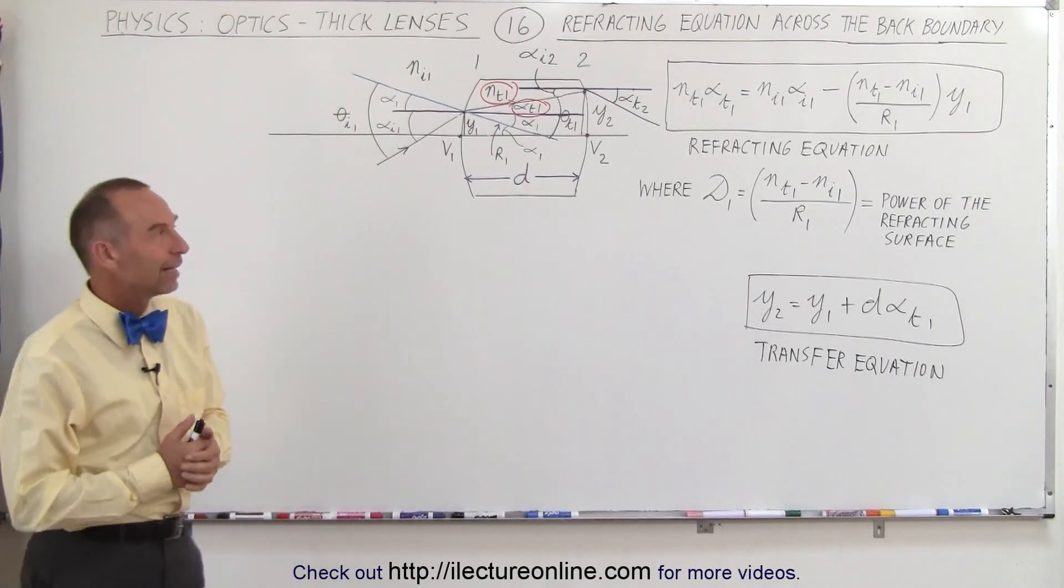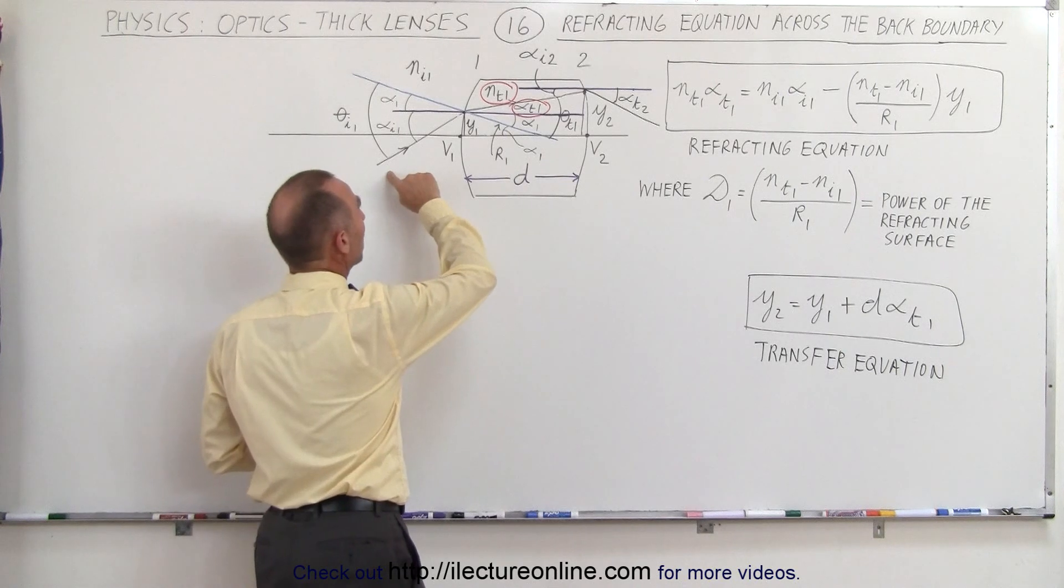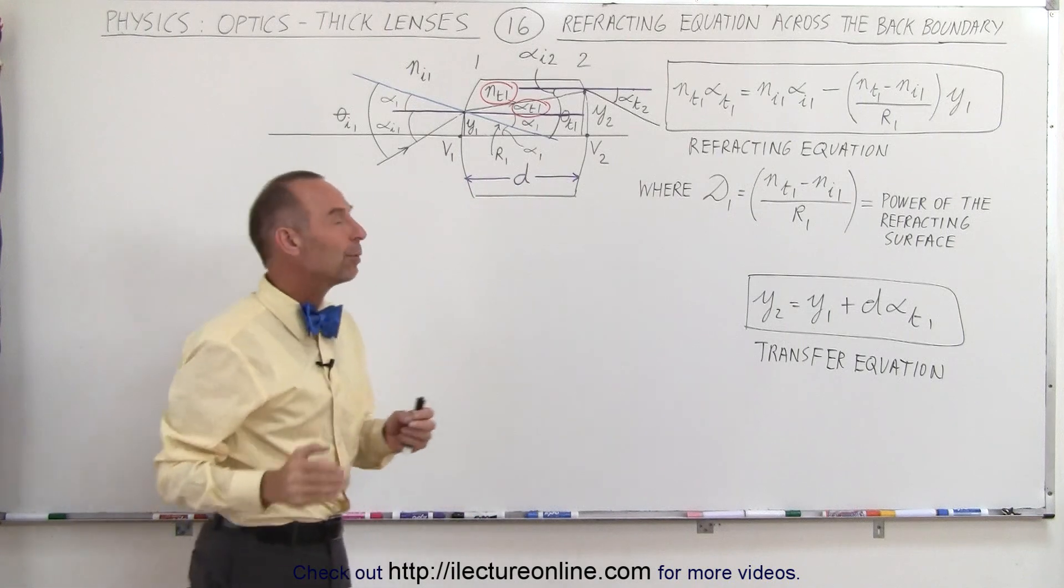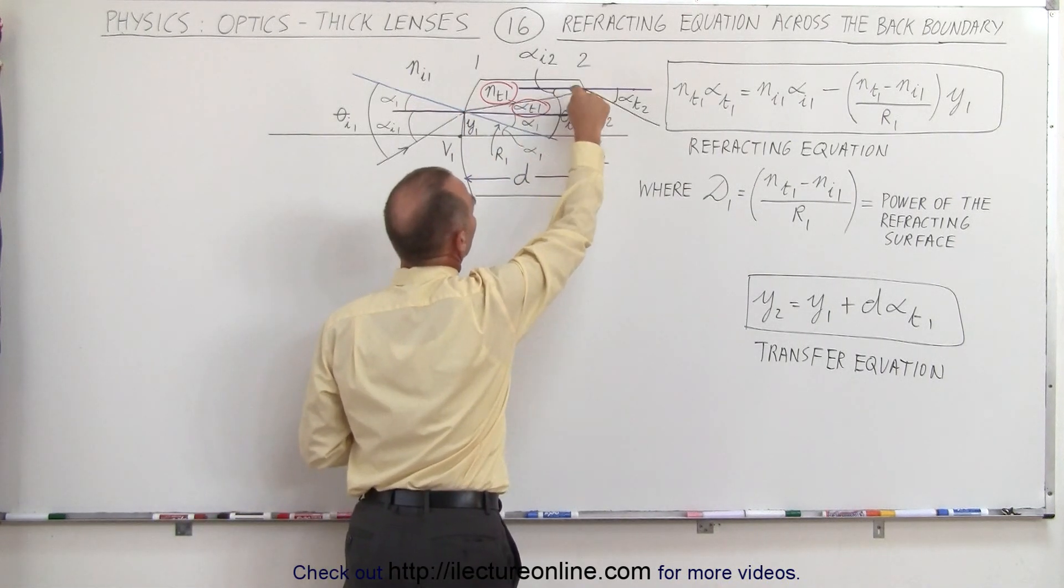Welcome to iLecture Online. So far we've tackled the problem with finding out how a ray crosses the first boundary and we found a refracting equation to describe that. Then we found a transfer equation which describes how the ray travels across the thick lens.